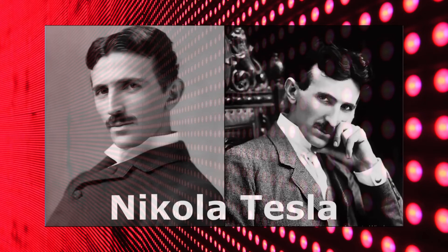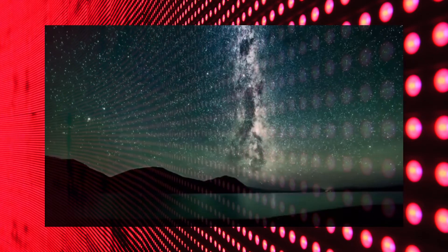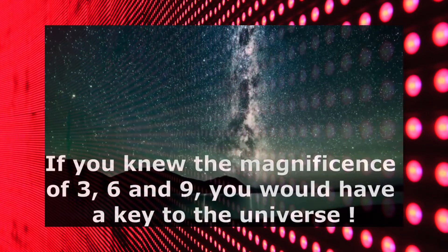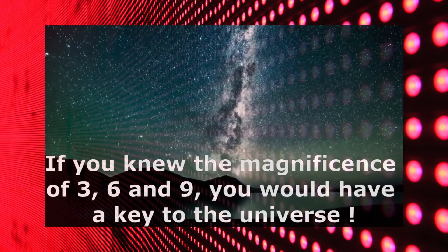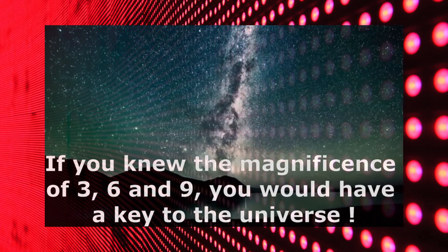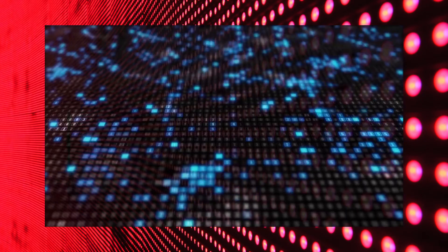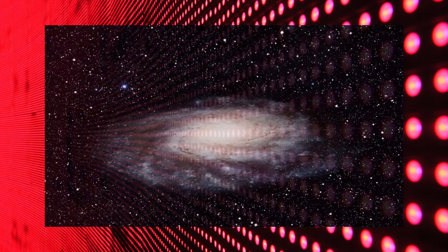Nikola Tesla, the greatest mind of all time and also a man of mysteries, said that if you knew the magnificence of 3, 6 and 9, you would have a key to the universe. So what did he mean by this? Had he found some code of the universe? In this video, I will tell you why Nikola Tesla said this.